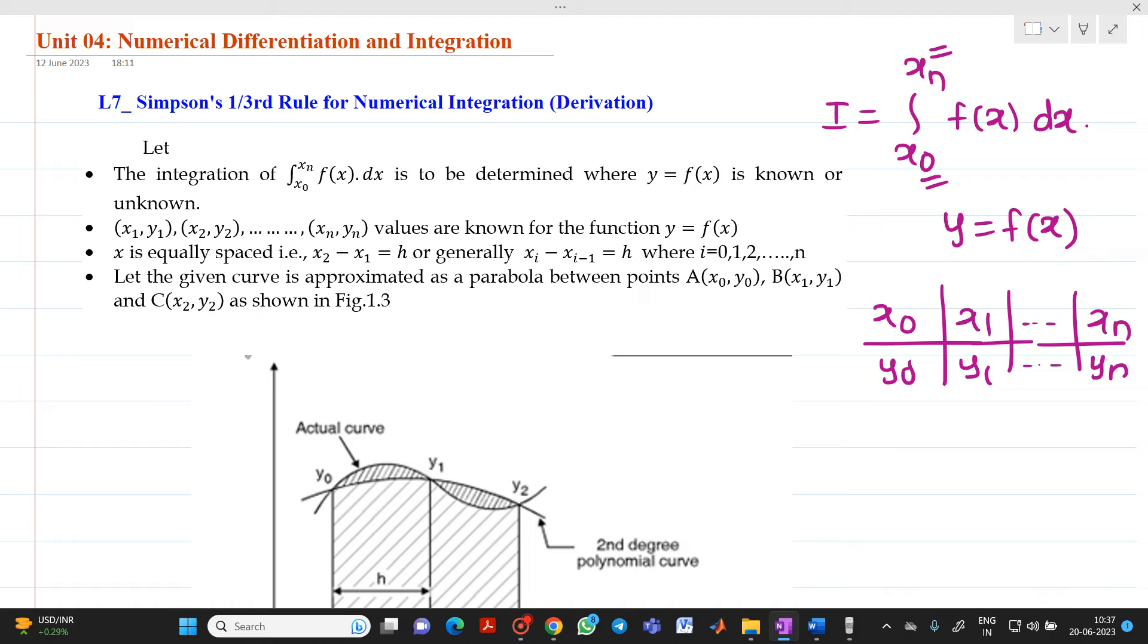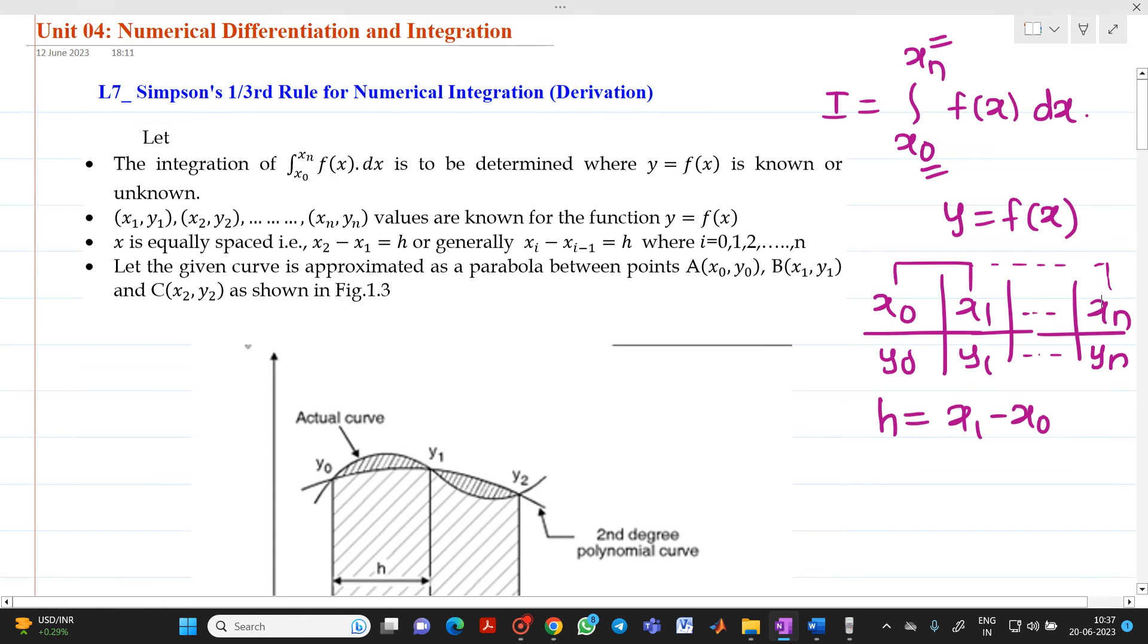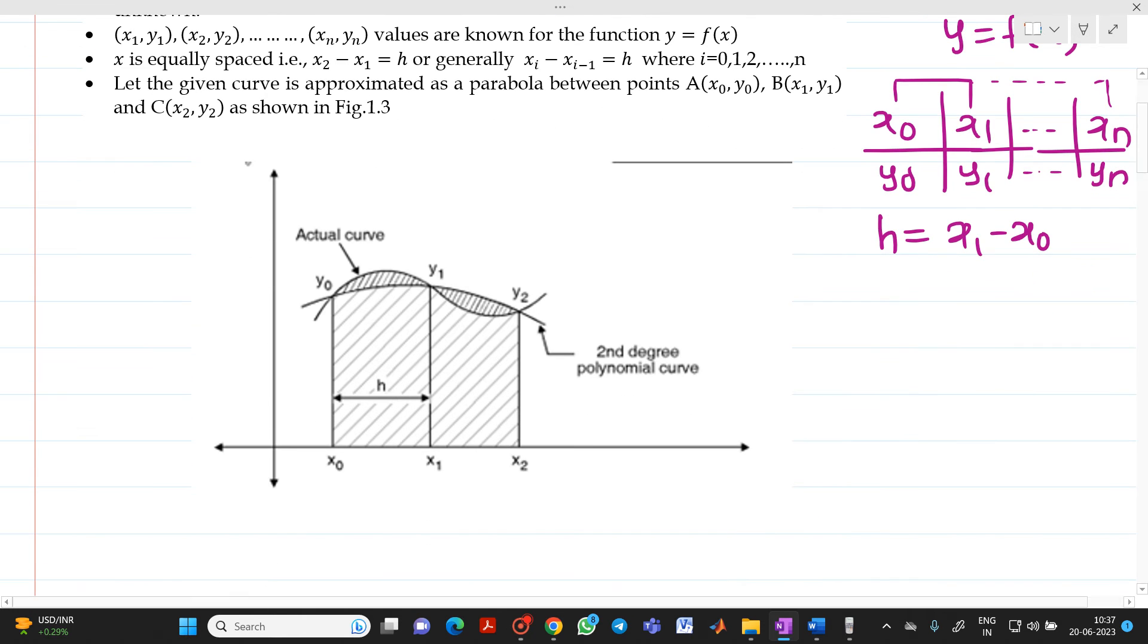The step size here, h will be equal to x1 minus x0. All the data which is given here will be equally spaced data. That is, the distance between each value of x is the same. So, let us draw a graph here. Let us say this will be your x-axis, this will be your y-axis.